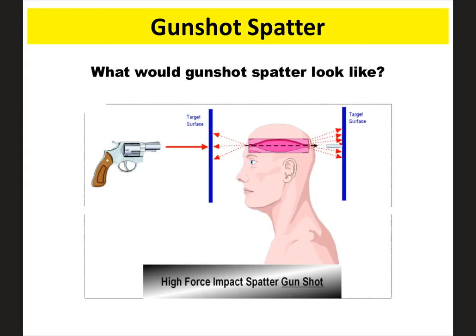The last thing I want to talk about is what gunshot spatter would look like. If a person was shot with a gun, when the bullet goes in you would see some spatter coming out the front — obviously the main spatter would be out the back. You would definitely have a lot of spots and spatter at the exit wound, but you would also see some spatter from the entrance wound as well. That's what you would see for a gunshot wound.